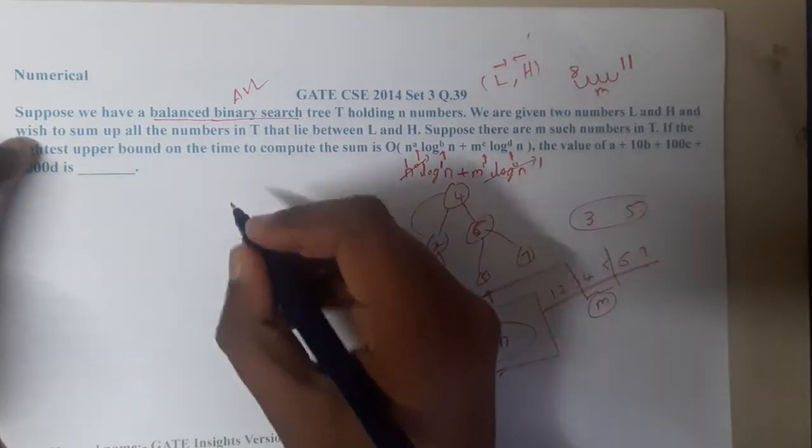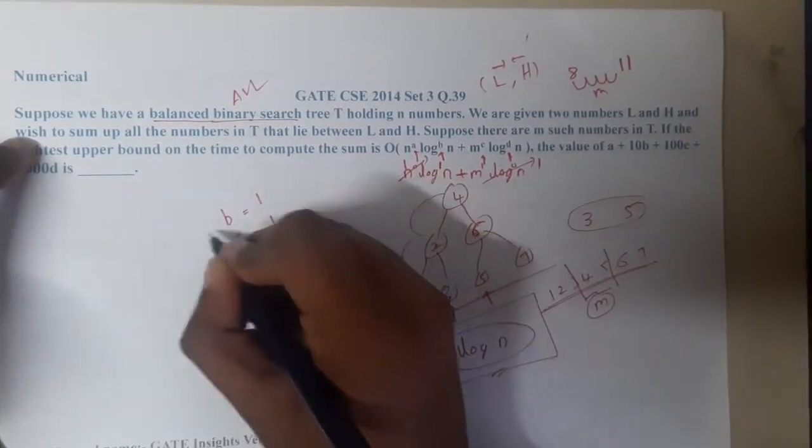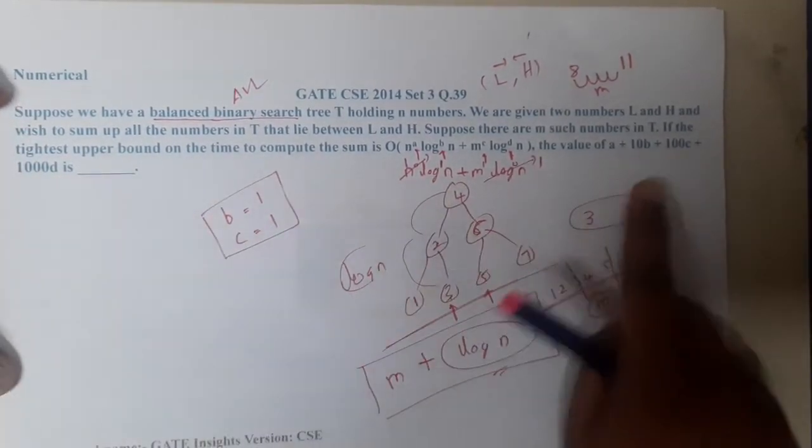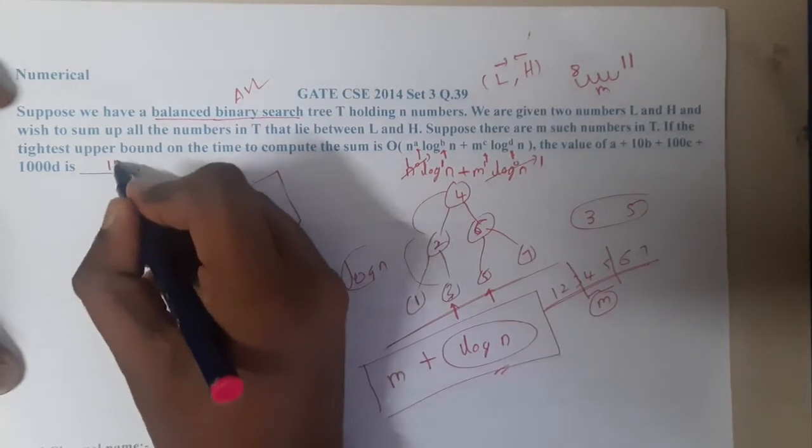Log n plus m. So the value of b equals 1 and value of c equals 1. If you substitute these values in our given expression, it is nothing but 10 plus 100, that is 110.